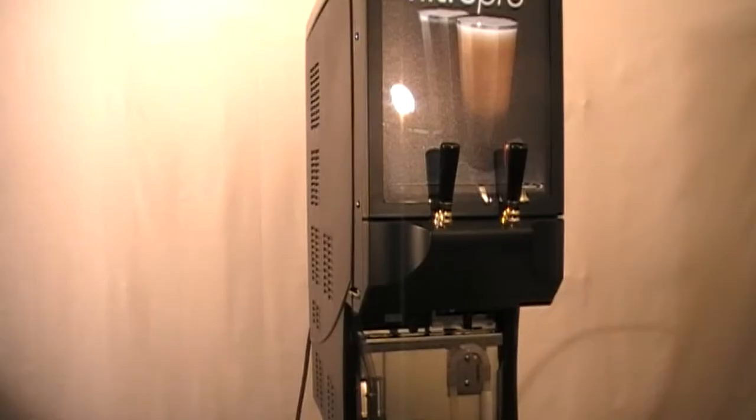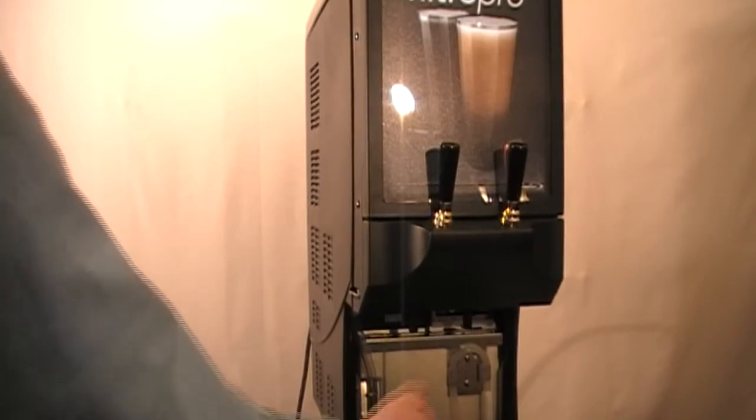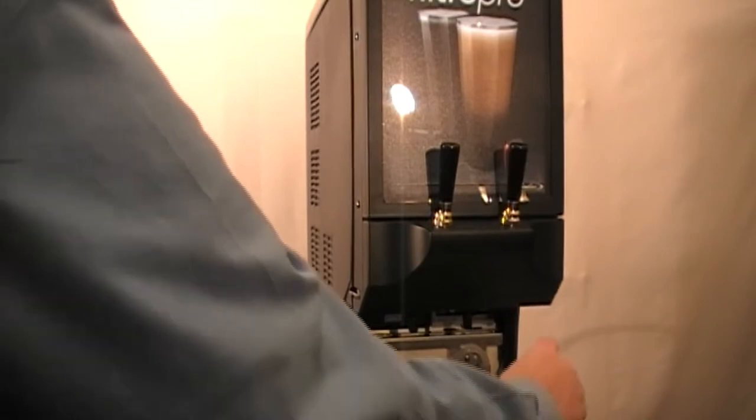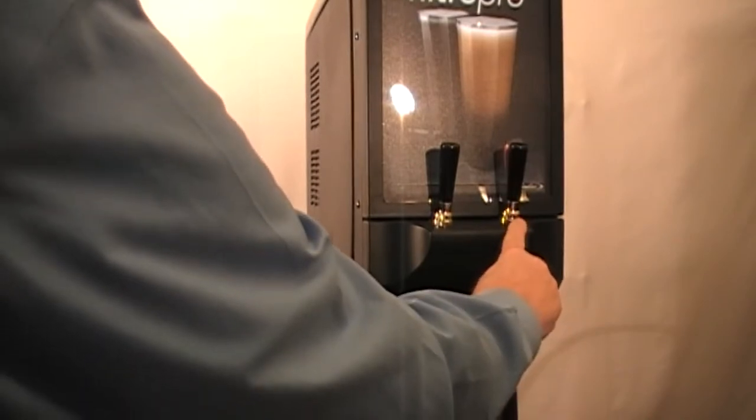The unit is pre-plumbed at the factory, so when the water and concentrate connections are made, the left dispense tap will be the plain cold brew coffee and the right dispense tap will be the cold nitrogen infused coffee.